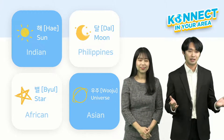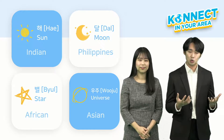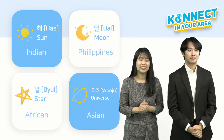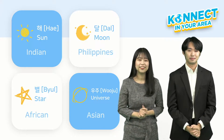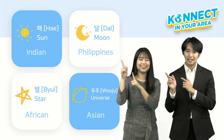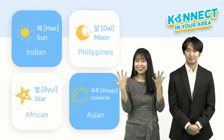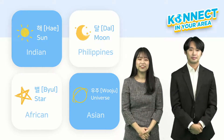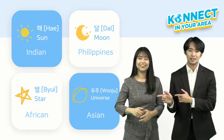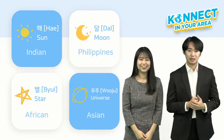You have been invited to a WhatsApp group, and the name of the WhatsApp chat room is your class name. 해 means sun and it's the Indian students' class. 달 means moon and it's the Philippine students' class. 별 means star and it's the African students' class. 우주 means the universe and it's the Asian class except for India and the Philippines.